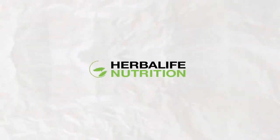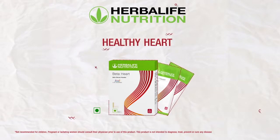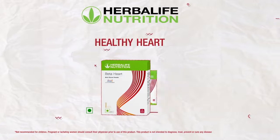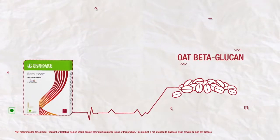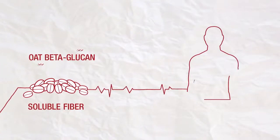Herbalife Nutrition brings to you Beta Heart, an easy way to add heart-healthy food to your diet. Beta Heart contains oat beta-glucan, a form of soluble fiber that helps maintain blood cholesterol levels within normal range.